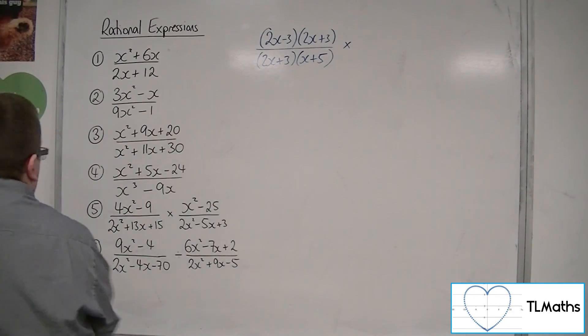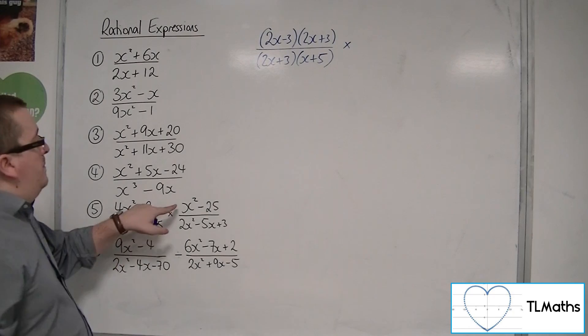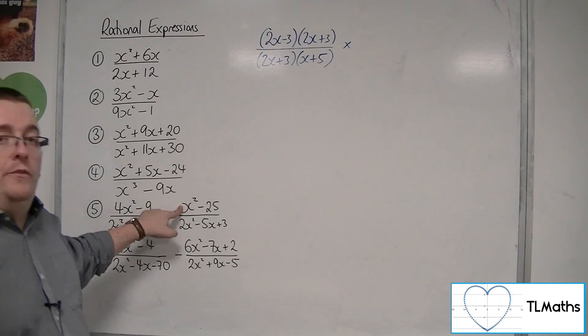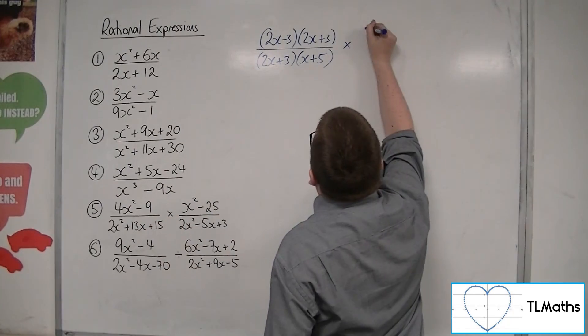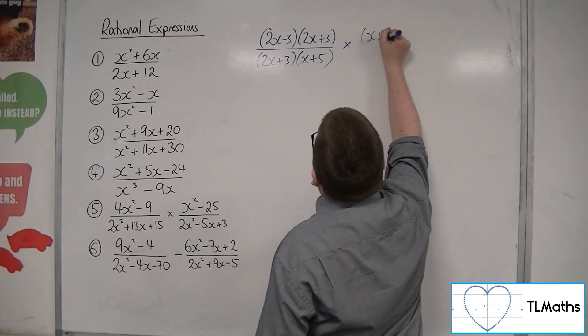We've then got x squared minus 25, so that's x plus 5 times x minus 5 — difference of two squares.